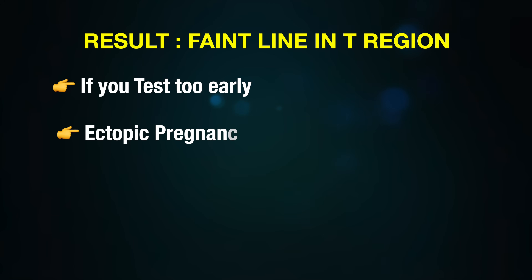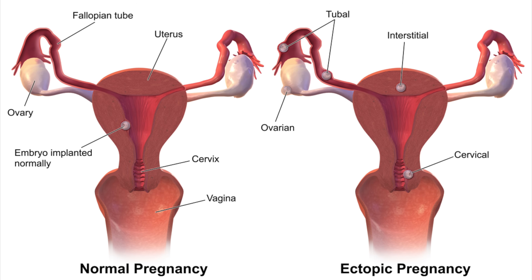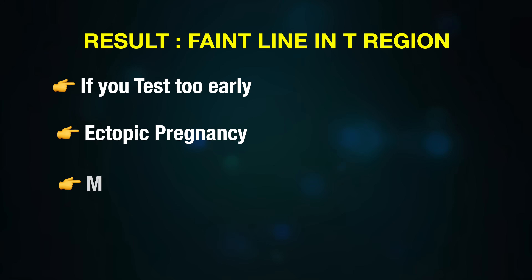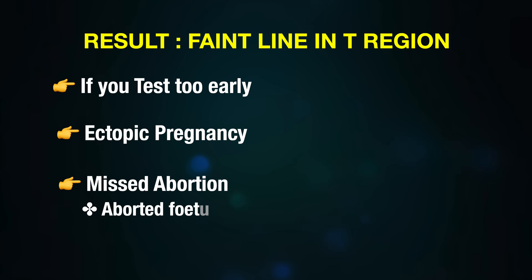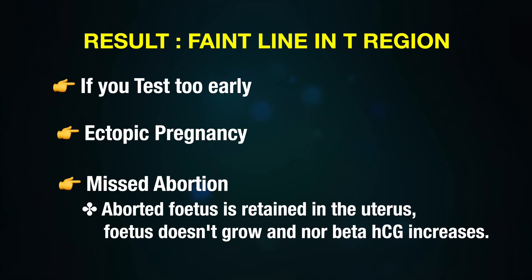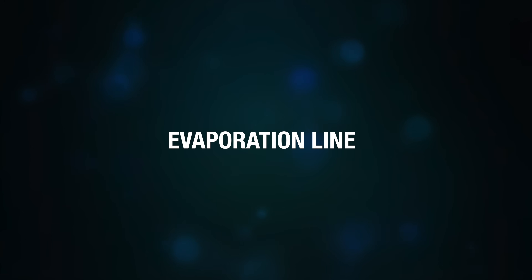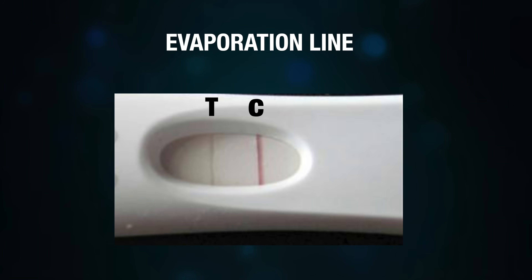Other reasons for a faint line include ectopic pregnancy, where the fertilized egg attaches somewhere outside the uterus — the line will be light and it's an emergency. Another reason is missed abortion, where the fetus is retained in the uterus but doesn't grow, and the beta HCG level does not increase; this is confirmed by ultrasound.